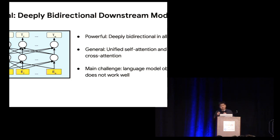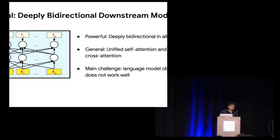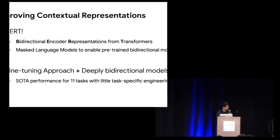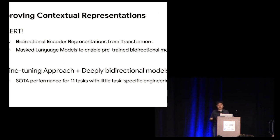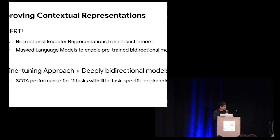Now we have decided the design for the downstream task model. The main challenge is that the language model objective does not work well for pre-training such models. That's why we talk about BERT — Bidirectional Encoder Representations from Transformers — which uses a masked language model to enable pre-training of deeply bi-directional models. BERT combines a pre-training approach with deeply bi-directional models, and we show this framework achieves strong performance on 11 tasks with very little task-specific engineering.